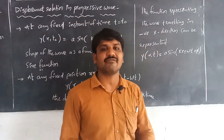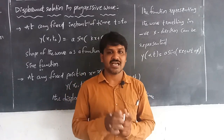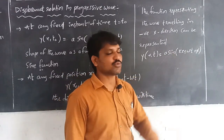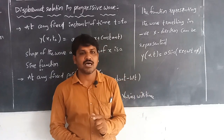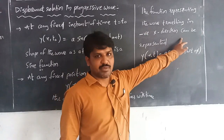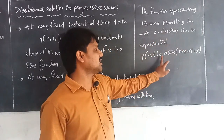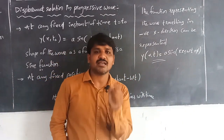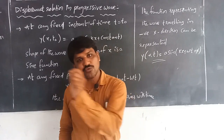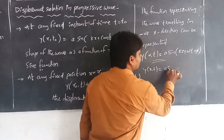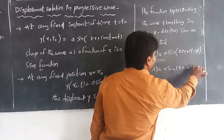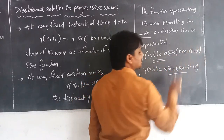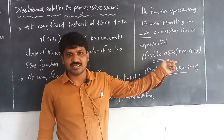When the wave is traveling in the negative x direction, the wave function — the displacement relation — is: y(x, t) = A sin(kx + ωt + φ). So to summarize: when the wave travels in the positive x direction, y(x, t) = A sin(kx − ωt + φ); and when traveling in the negative x direction, y(x, t) = A sin(kx + ωt + φ). These are the displacement relations for a progressive wave.